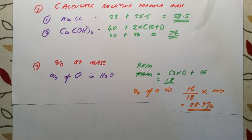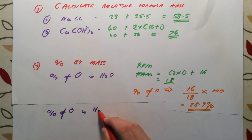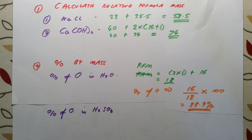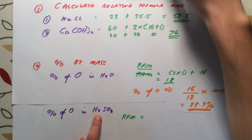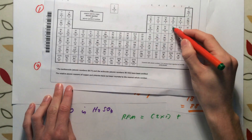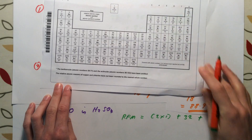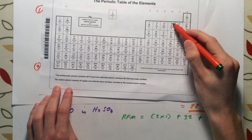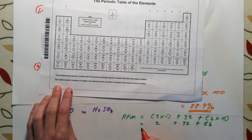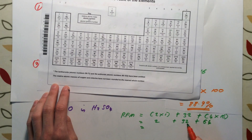The final example is a little bit trickier. We're going to work out the percentage by mass of oxygen in H₂SO₄, sulfuric acid. We start by working out the relative formula mass. Hydrogen is 1 and we've got 2 of them, so 2 times 1. Plus the relative atomic mass of sulfur, which is 32. Plus the total contribution from oxygen: relative atomic mass of oxygen is 16, we've got 4 of them, so 4 times 16 is 64. That's 2 plus 32 plus 64, giving a total relative formula mass of 98.